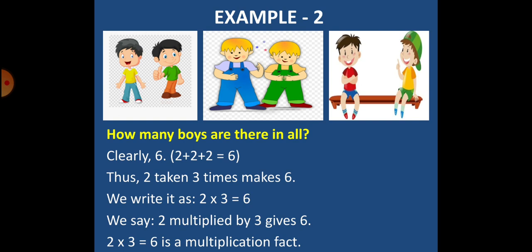Thus, 2 taken 3 times, that makes 6. And we write it as, 2 into 3 is equal to 6. So, we can say that, 2 multiplied by 3 gives 6. And 2 into 3 is equal to 6 is a multiplication fact.